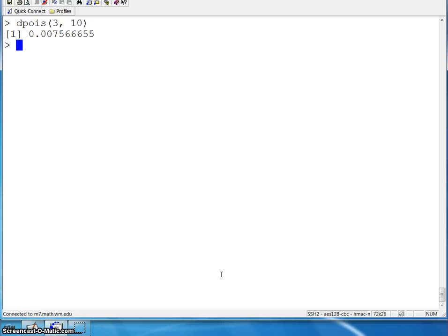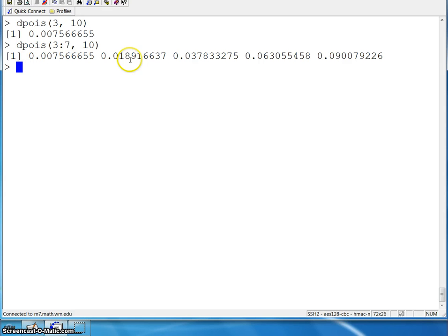You can also put in a string of values. If you want the mass values at 3 through 7, you can pass it a vector there, and you can see you'll get the probability mass function at 3, 4, 5, 6, and 7.